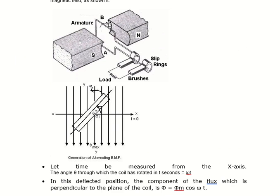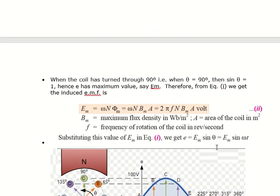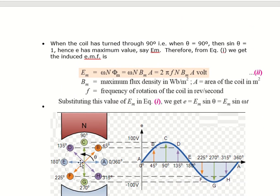There will be a magnet and between it, a coil is rotating. Depending upon the position of the coil, an EMF is generated. When the coil is at the position where theta equals omega t equals 0, meaning the coil is lying on the x-axis, EMF is 0. When the coil is rotated through 45 degrees, EMF is EM sin 45. At 90 degrees, E equals EM sin 90, which is the maximum value. In this way, depending upon the rotation of the coil, you get a sinusoidal voltage.